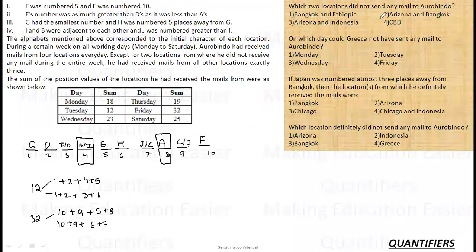First, which of the two locations did not send any mail to Aurobindo? So one is definitely Arizona. Second is B or I. So that cannot be determined because the second location could be anything. On which day could Greece not have sent any mail to Aurobindo? Greece is 1. So 1 is definitely not used in this combination. So this combination is 32, Friday. So answer is Friday. On Friday, Greece definitely did not send.